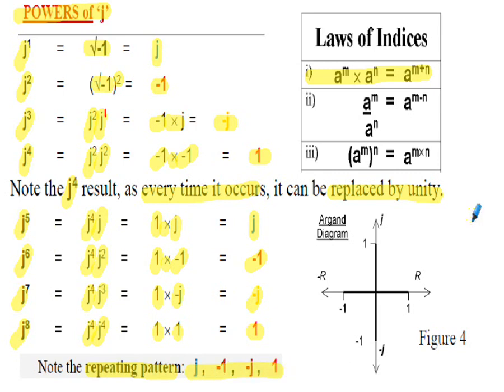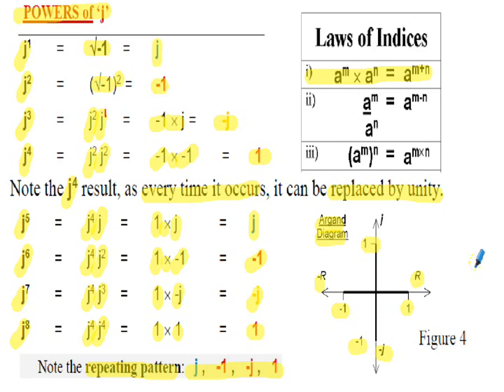If we were to plot the repeating pattern on the Argand diagram, we would have j on the imaginary axis, negative 1 on the real axis, negative j on the imaginary axis, and positive 1 on the real axis. Knowing these results can sometimes help simplify problems involving complex numbers.